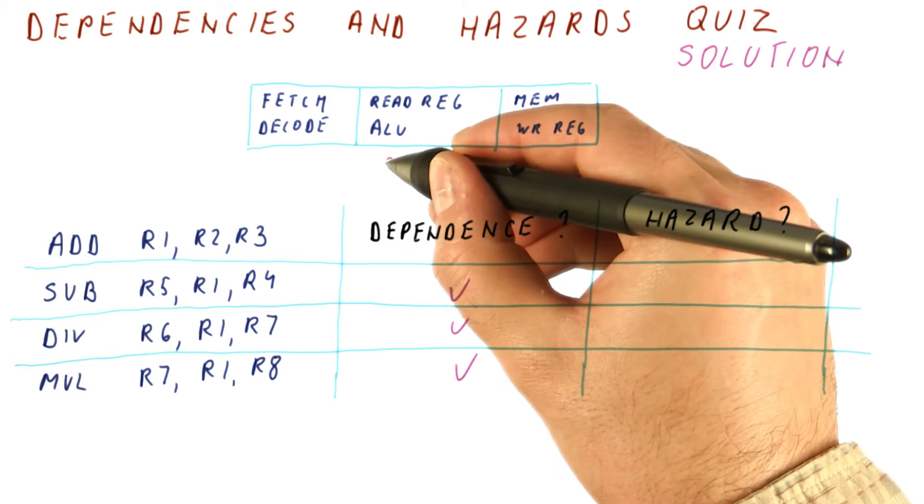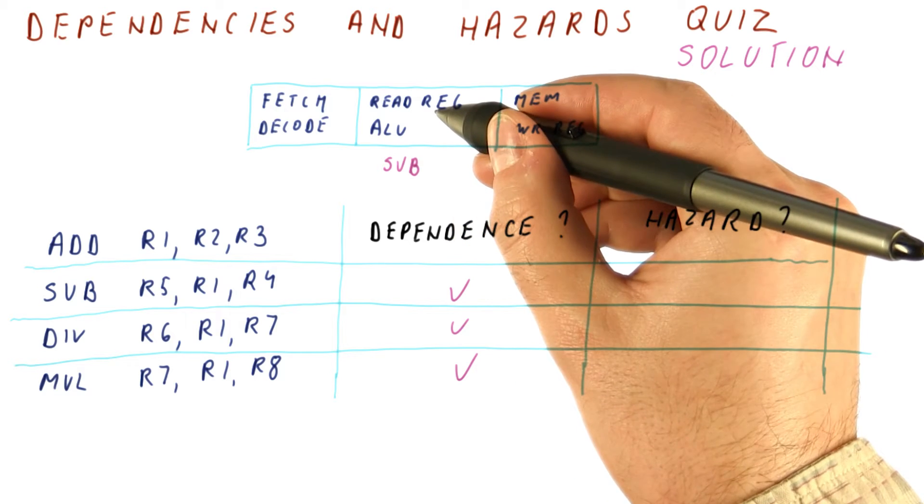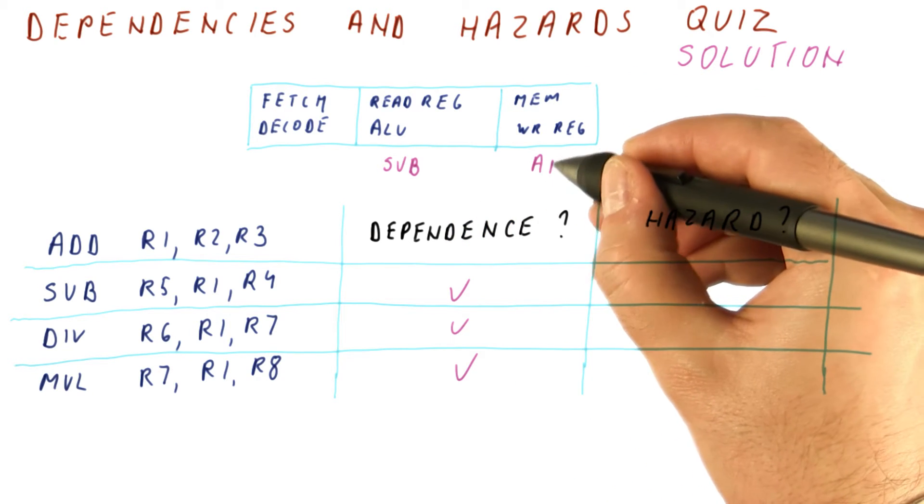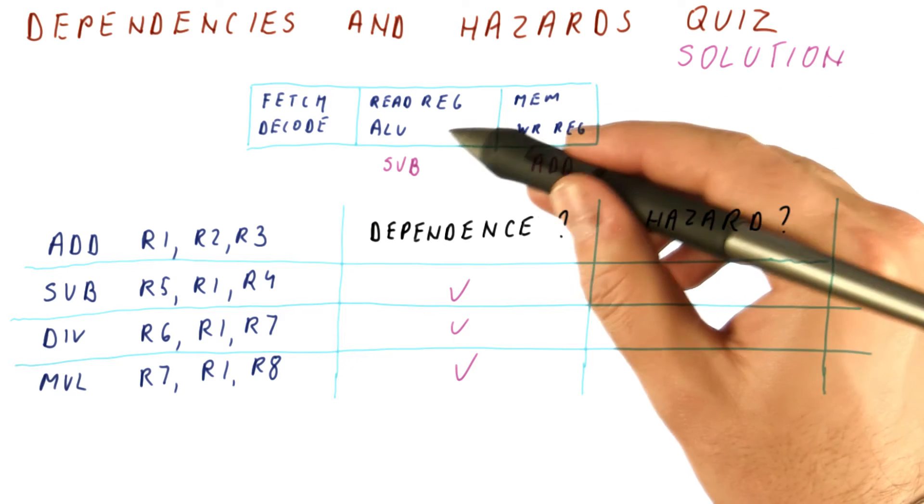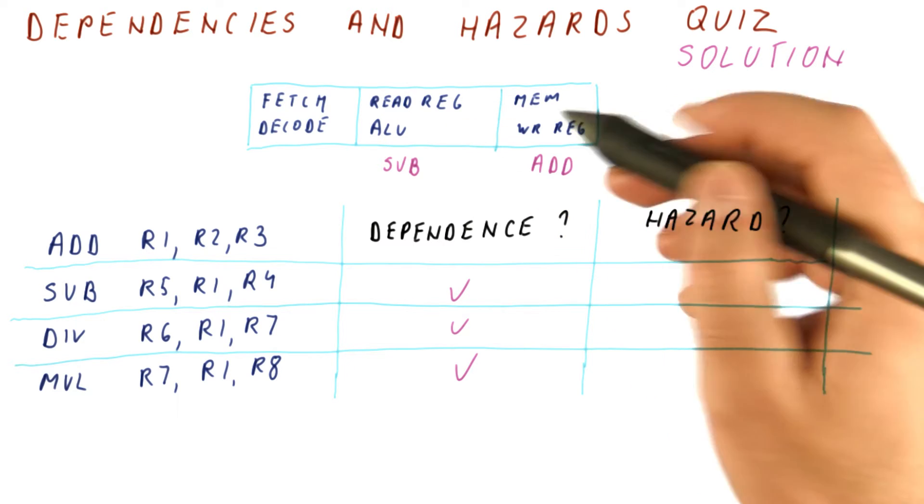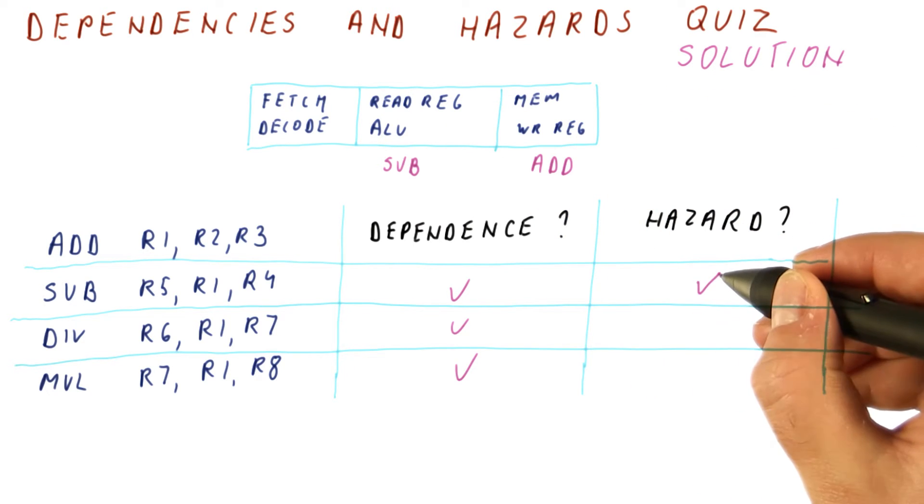In the stage where the subtract is reading the register, the add is still writing it, so the subtract may not get the value from the add. So there is a hazard here.